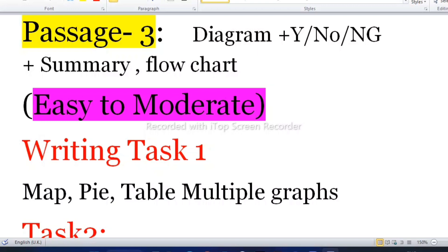In Writing Task 1: map, pie chart, table, and multiple graphs would be there, so you can check the templates and then you can write these templates. I have the templates, you can say band 7 if you follow the templates properly.